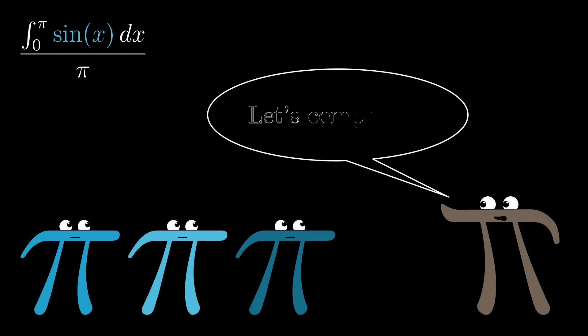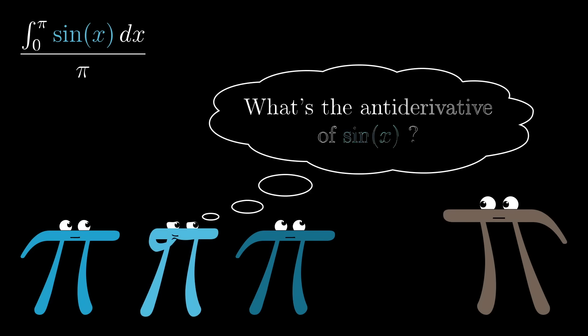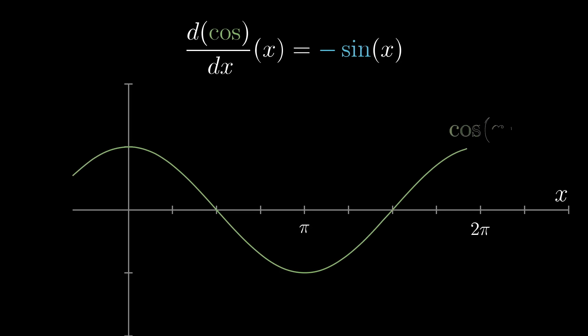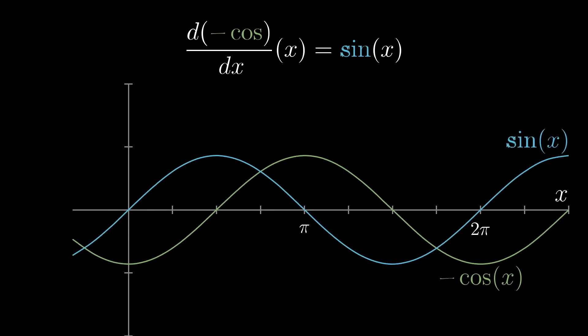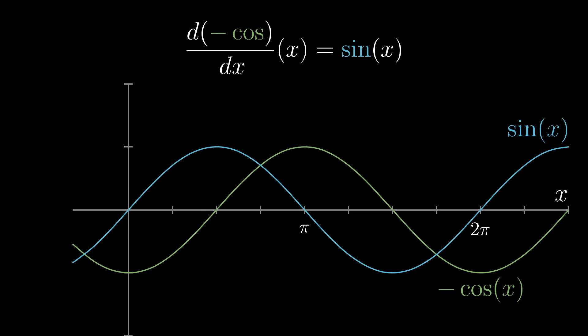So, with this expression in hand, let's actually solve it. As we saw last video, to compute an integral, you need to find an antiderivative of the function inside the integral, some other function whose derivative is sine of x. And if you're comfortable with derivatives of trig functions, you know that the derivative of cosine is negative sine. So if you just negate that, negative cosine is the function we want, the antiderivative of sine.